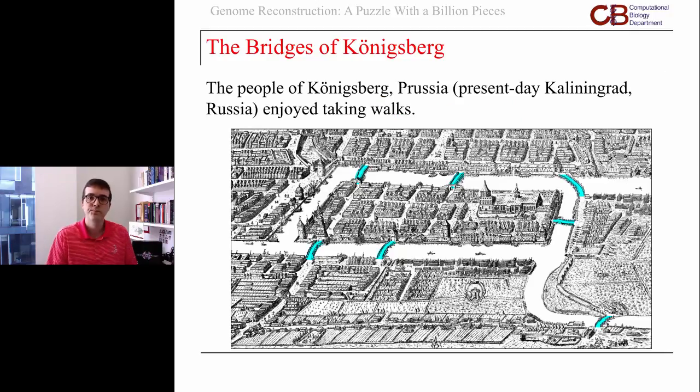There was a city called Königsberg in present-day Russia that was a city of bridges. Pittsburgh here, where Carnegie Mellon is, is also a city of bridges. We have over 400 bridges in the city, and in Königsberg they had seven bridges that crossed the river. The residents had a simple question.